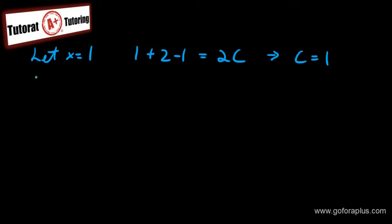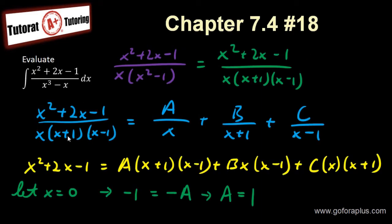Now, let x equals minus 1. If x equals minus 1, this term is 0 and this term is 0. I have only the middle term, minus 1, minus 1, minus 2, times minus 1, so I get 2B.